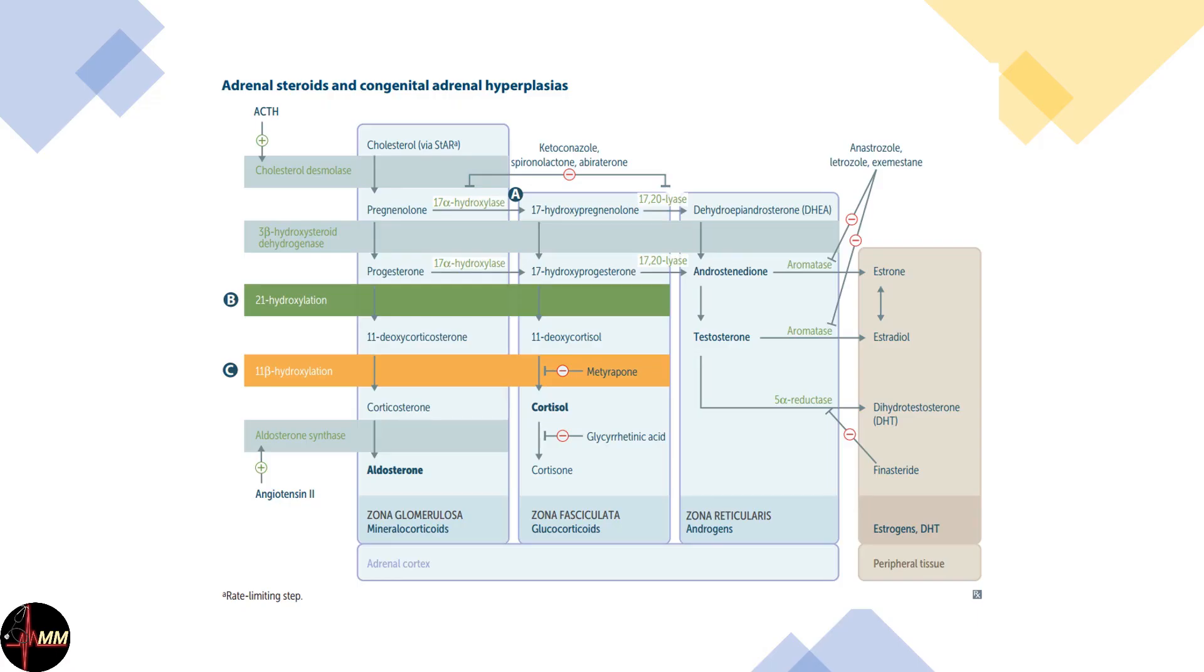This diagram illustrates the biosynthesis of adrenal steroids. The process begins with cholesterol, which is converted into various hormones in the adrenal cortex. Each step involves specific enzymes, which we'll explore in detail.